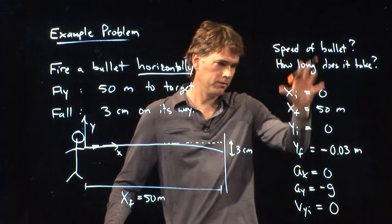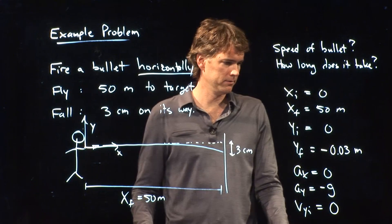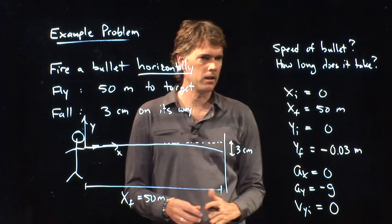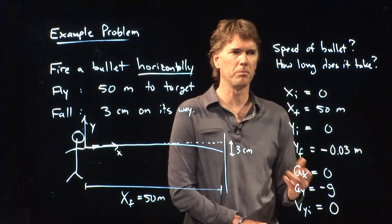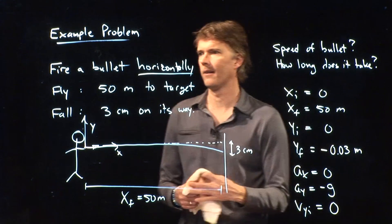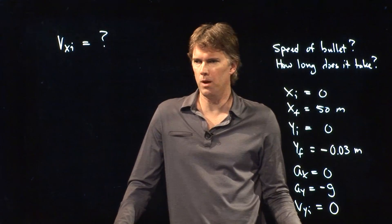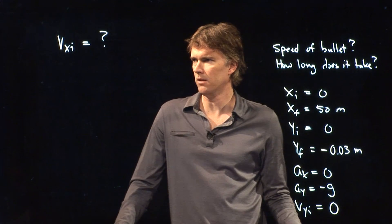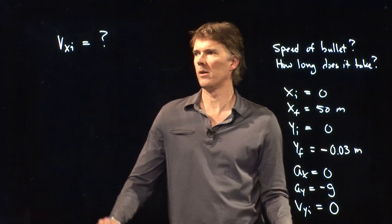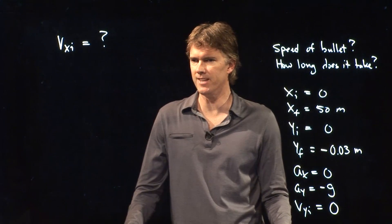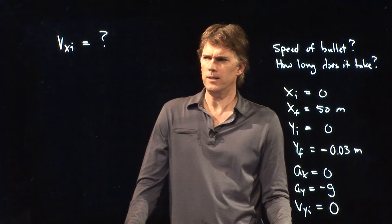Okay. So this is everything we know. I mean, it's quite a bit. We know a lot of stuff. So now let's grab some kinematic equations and see if we can answer these two questions. What's the speed of the bullet and how long does it take? So we want to figure out what the speed of the bullet is. And we said that it's fired horizontally. So vy initial is zero. And so really all we're looking for is vx initial.